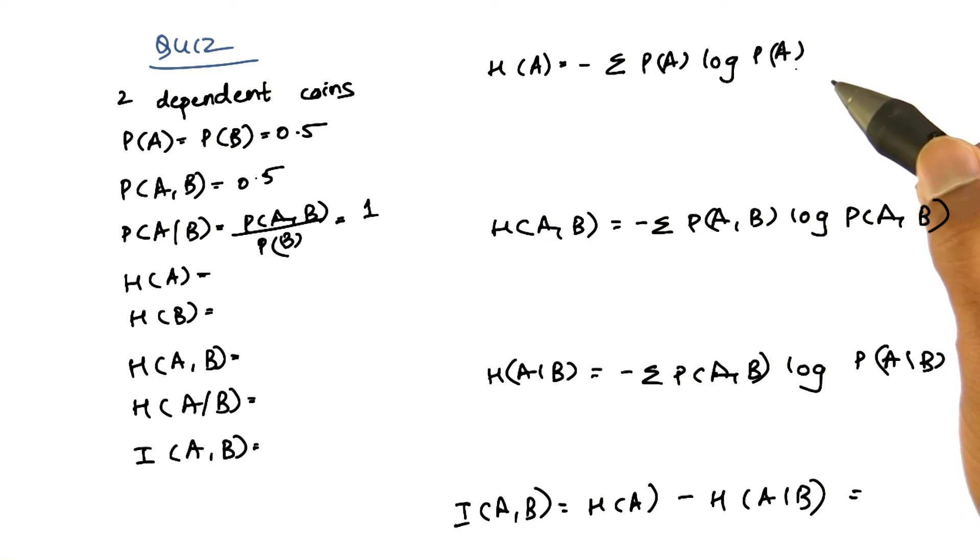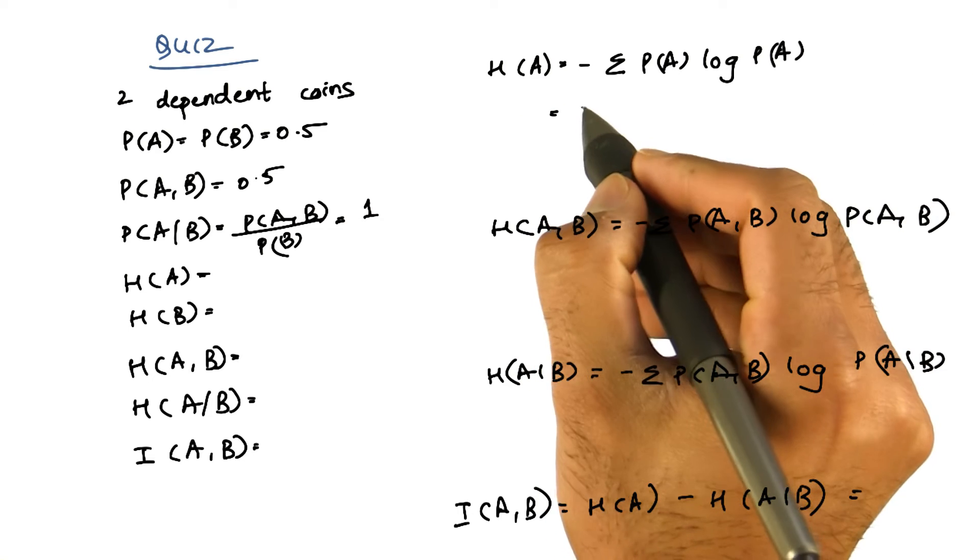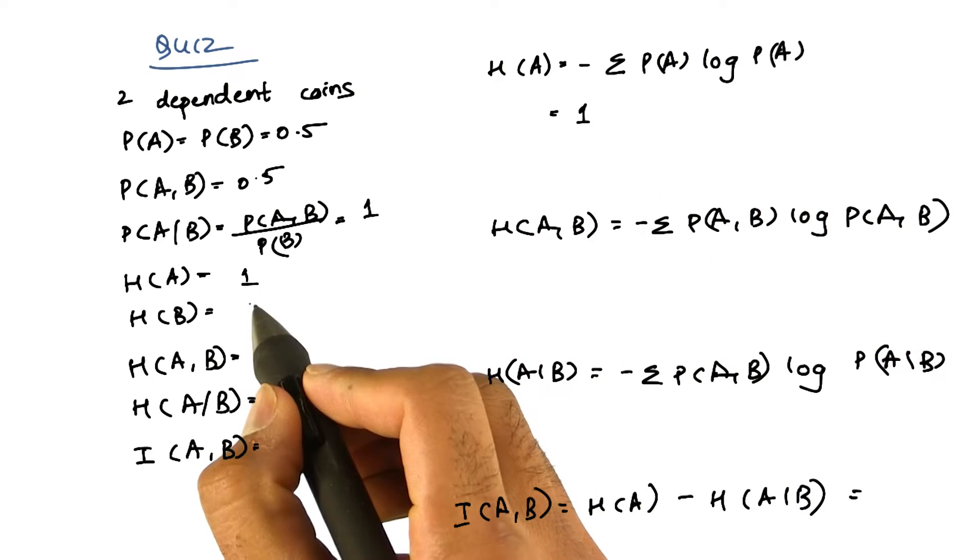Now what is the entropy of A? It is similar to the last example because we are still using fair coins. So the entropy of A is 1, the entropy of B is also 1.